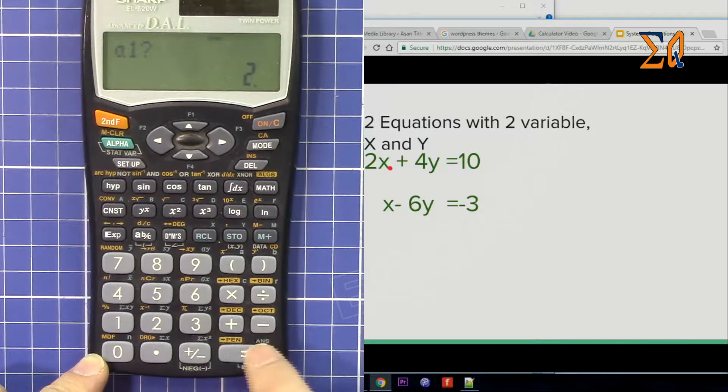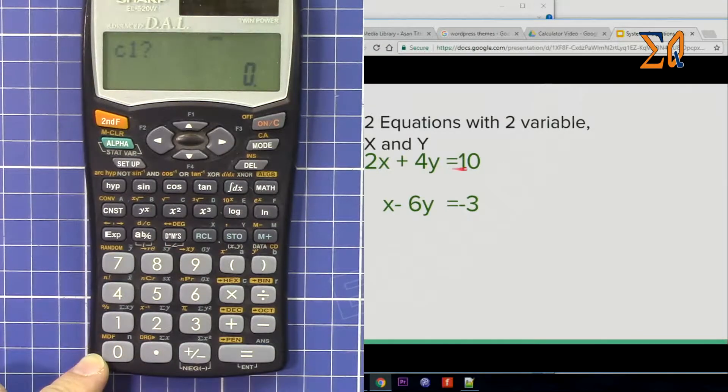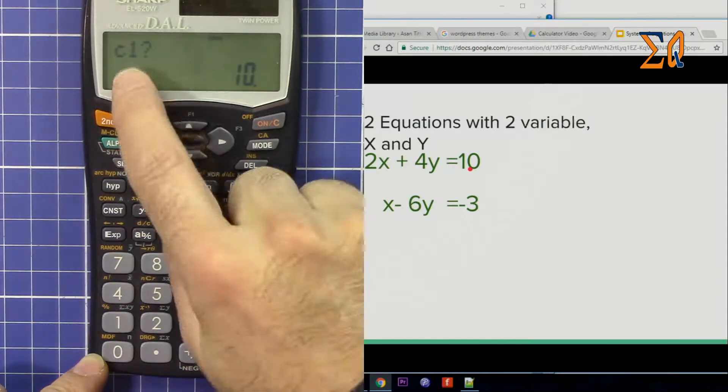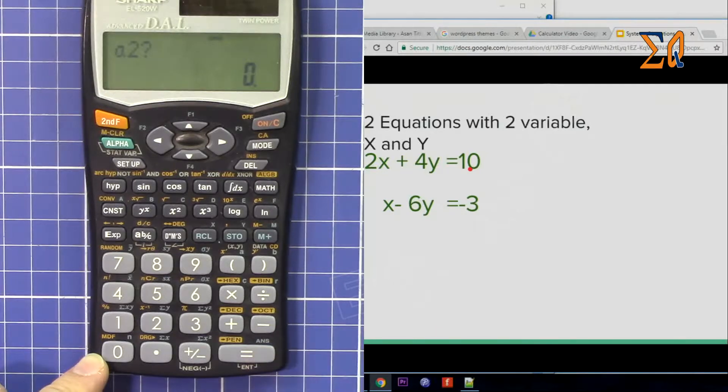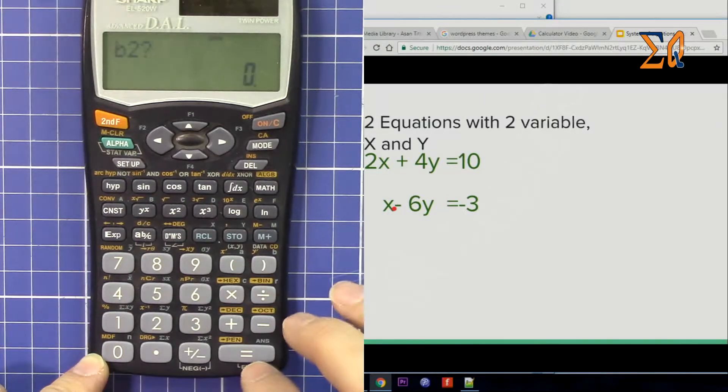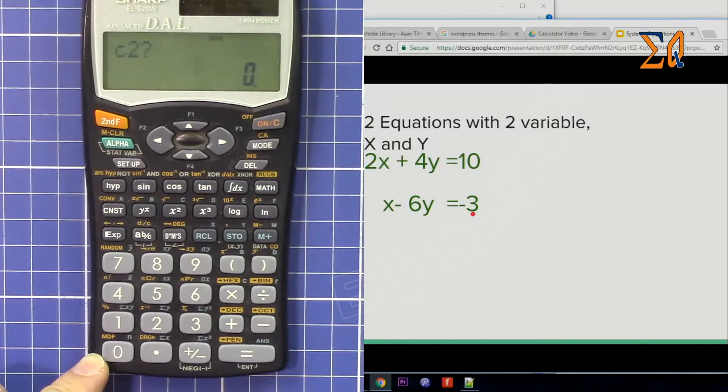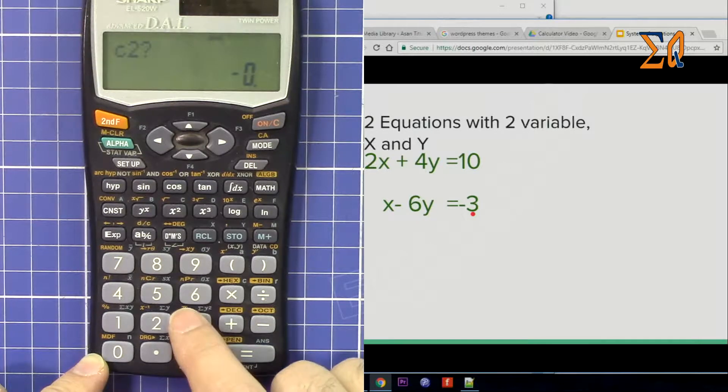The coefficient of X is 2, then press equal. Now enter B, which is 4, and then C is 10. After this, we go to equation 2. A2, the coefficient of X, is 1. B is -6, and then C is -3. I'm pressing the minus button.